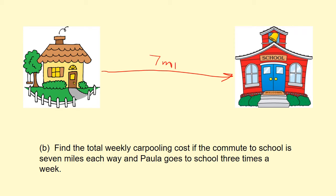At the end of the day, when she's done learning, she gets back in the car and drives home again, and she does that three days a week. They get in the car, drive to school, learn some stuff, and then drive home again, three days a week. What they want you to do is calculate the total weekly cost for Paula for this commute.